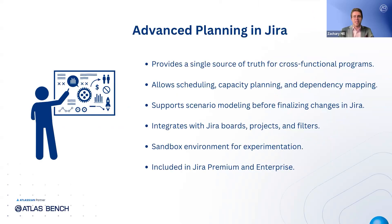Advanced planning in JIRA is all about taking complex, cross-functional work and making it manageable. With JIRA's plans features, you can pull in data from boards, projects, and filters to visualize everything in one place, giving you a single source of truth to track initiatives and align multiple teams. Within a plan, you can allocate team capacity, understand dependencies between tasks, and model different scenarios to see how changes might affect your timeline — all before committing those changes back into JIRA. Think of it as a sandbox where you can experiment, plan, and iterate, ensuring that when you do hit update, you're confident in what you're delivering. This advanced planning capability elevates your planning from individual backlogs to large-scale coordinated programs.